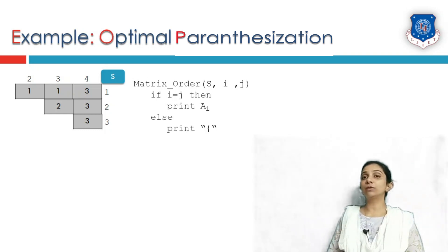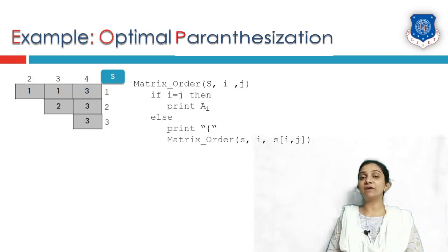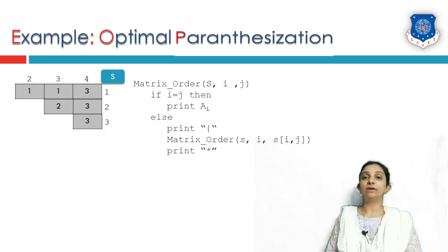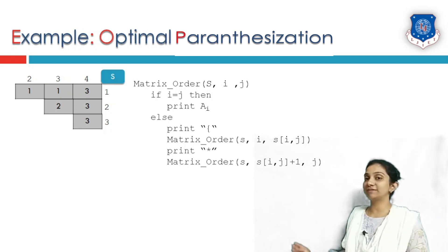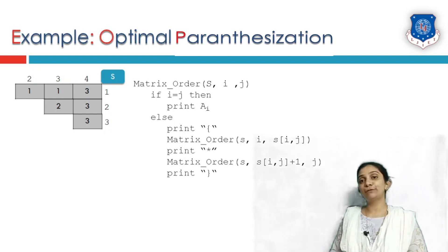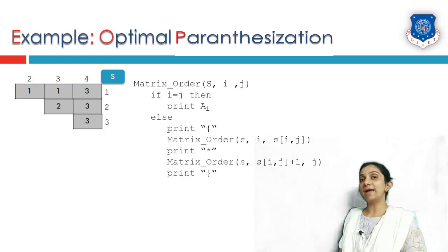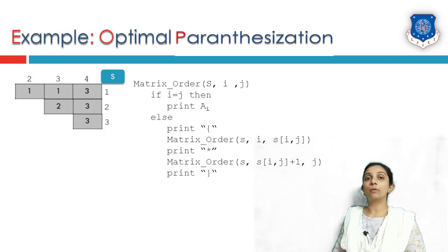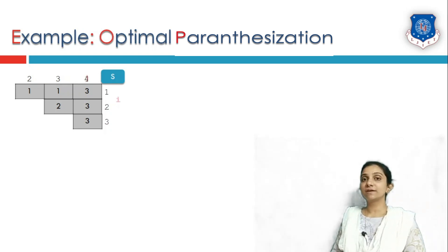Otherwise, we print an opening bracket, then recursively call the matrix order function with s, i, and s[i][j]. Then we print the multiplication sign, make another recursive call with s, s[i][j]+1, and j, passing three parameters, and then put the closing bracket. That is the complete matrix order multiplication, or order of parenthesization. Now let us take the s table and start working through it.